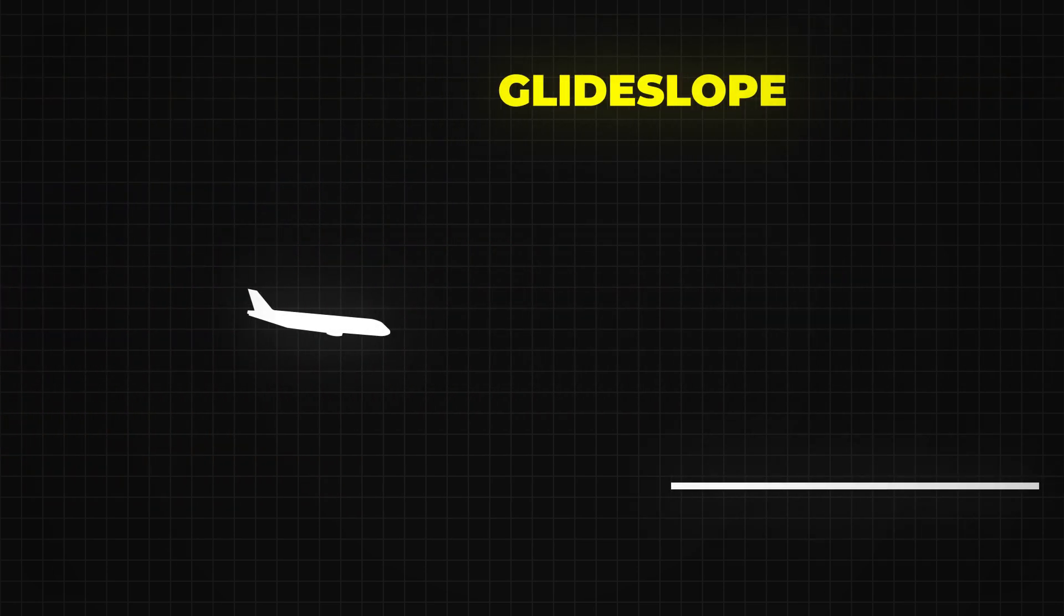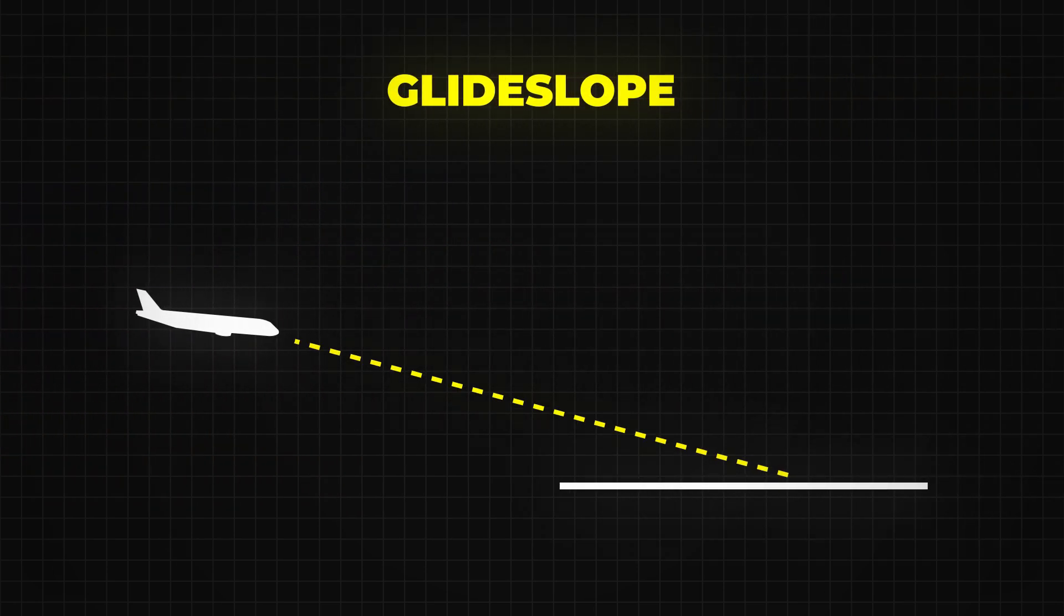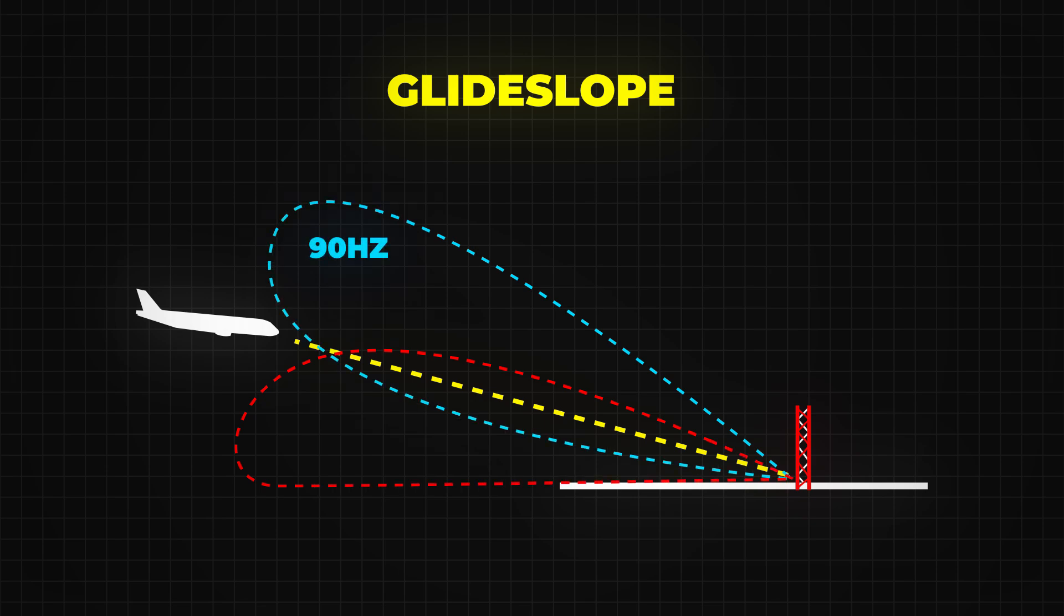The glide slope, on the other hand, gives vertical guidance. It tells the pilot whether the aircraft is too high or too low on approach. The glide slope antenna is placed near the touchdown zone of the runway and typically guides the aircraft along a descent angle of around 3 degrees, which is a safe and standard approach angle.